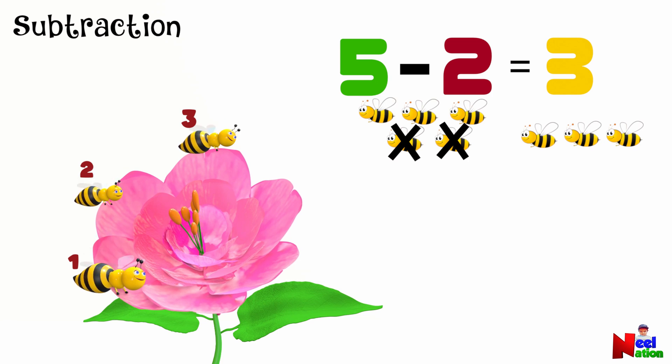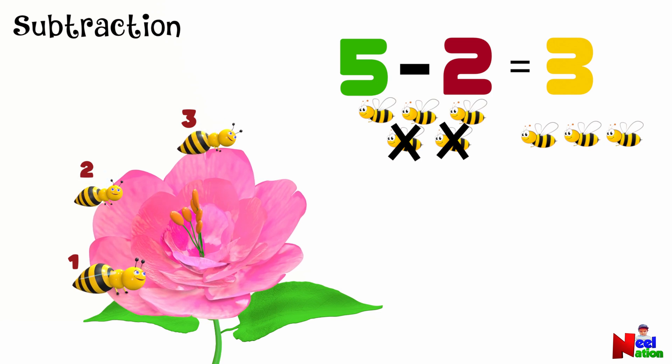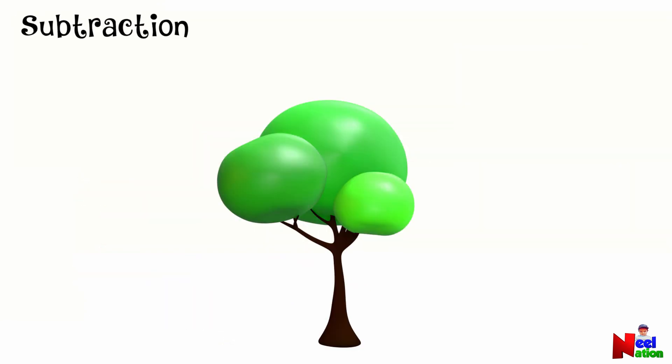Subtraction helps us figure out how many remain after something is taken away. Let's look at this tall mango tree. It has four yummy mangoes hanging in its branches. Yummy mangoes.